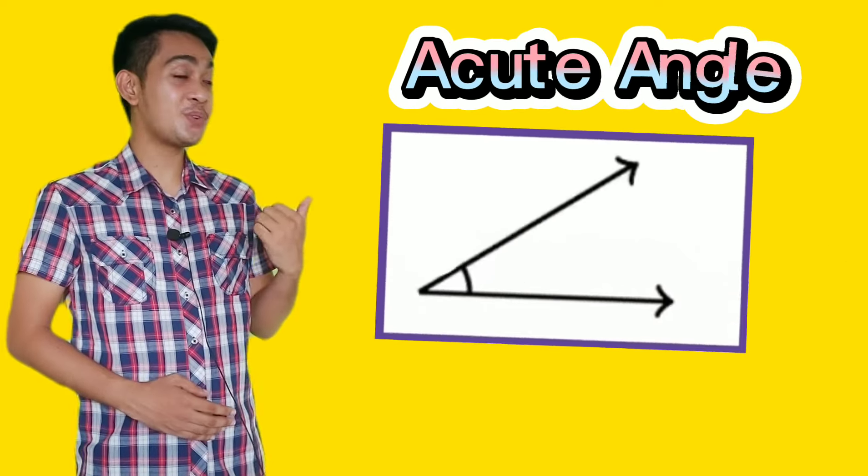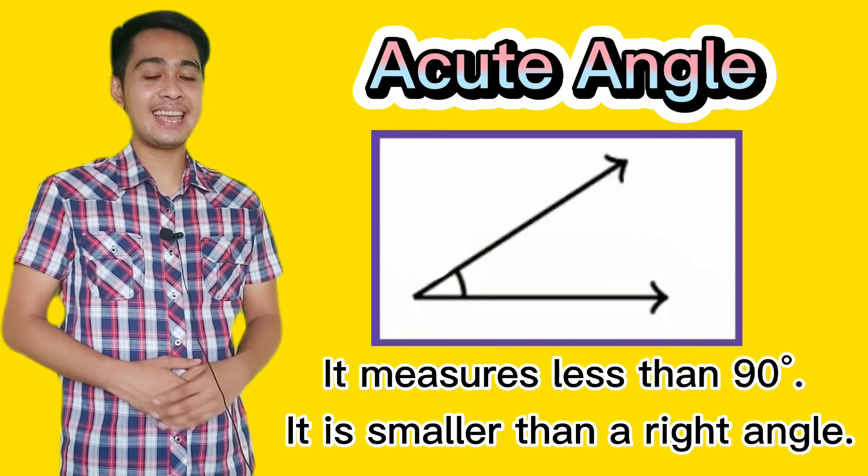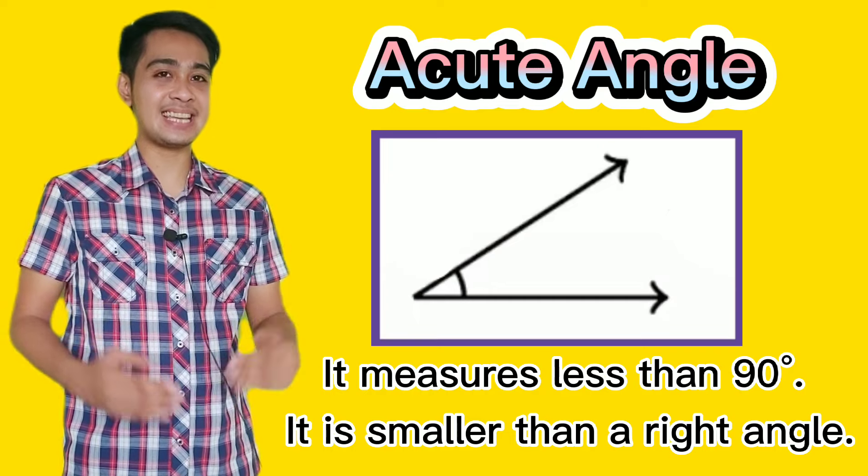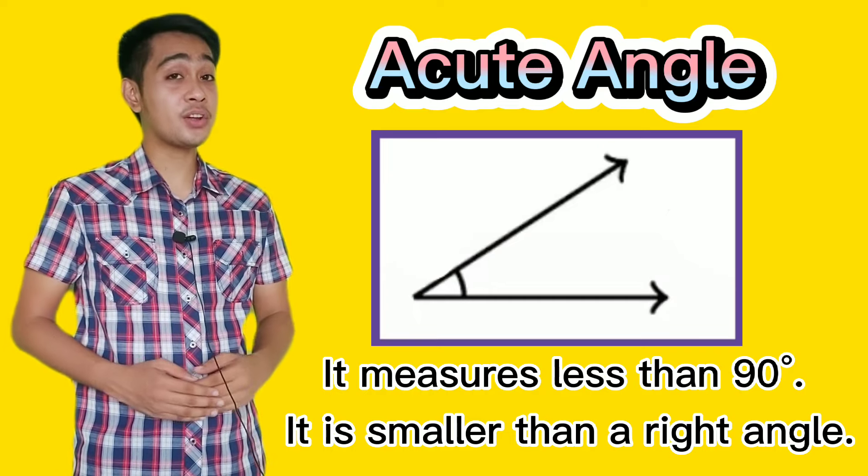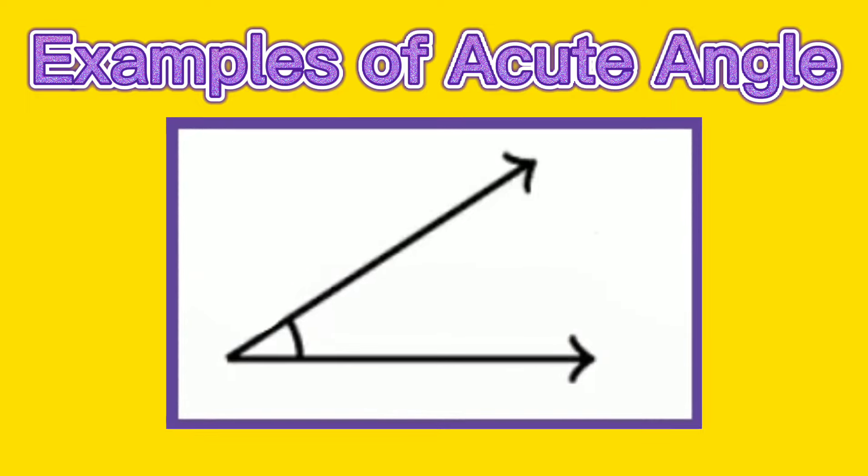Let's now have the types of angles. The first one is the acute angle. An acute angle measures less than 90 degrees and it is smaller than a right angle. I will give you some examples of acute angle represented by the following figures.